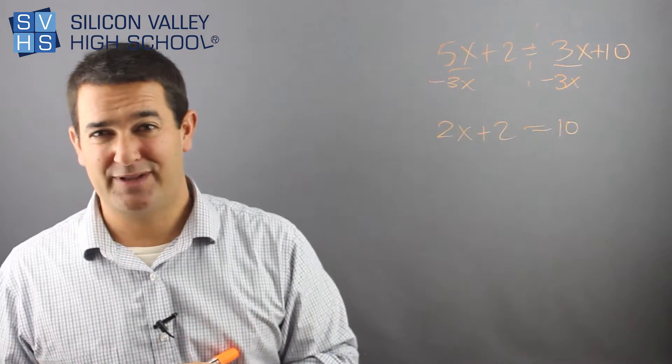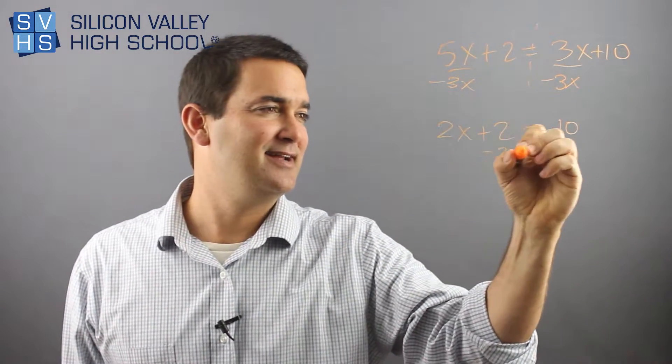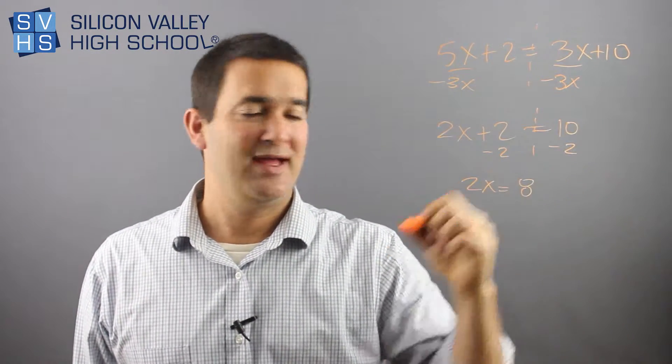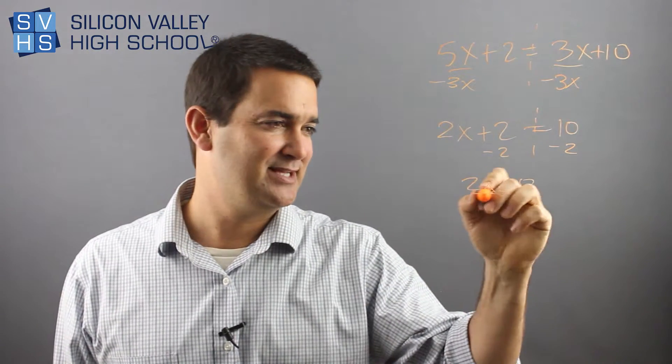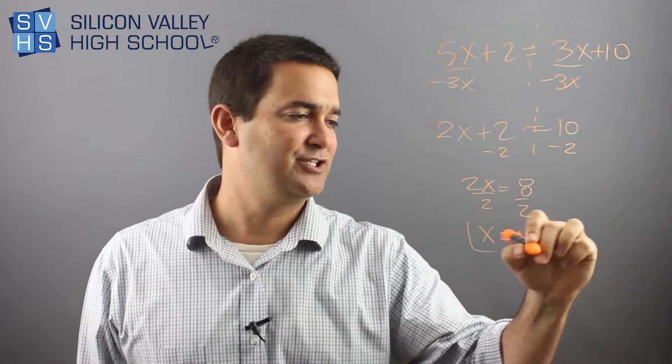And now this looks kind of normal, like a normal one. At least my x's are dealt with. Now let's get this guy out of here, minus 2, right? And then I have 2x equals 8. And then from there, you know what to do, you divide both sides by 2. And the answer is x equals 4.